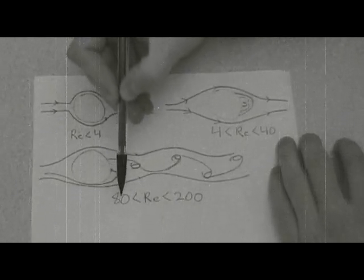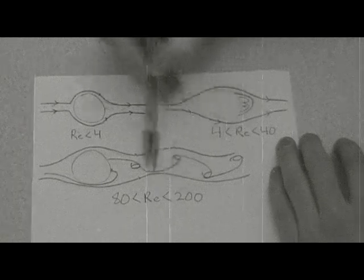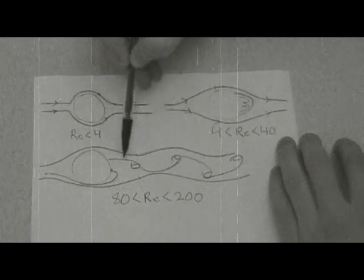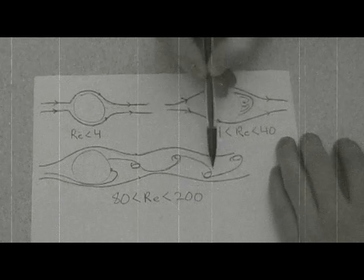For Reynolds numbers between 80 and 200, unsteady oscillating vortices are shed off the trailing edge of the cylinder.